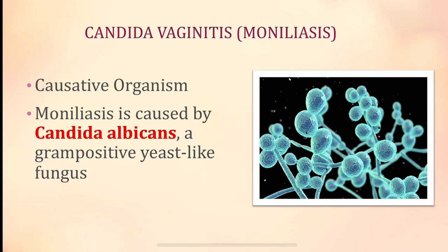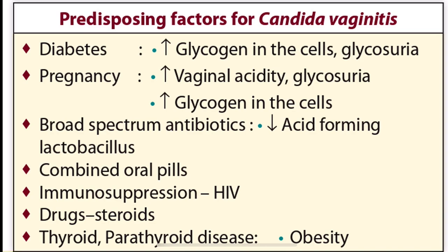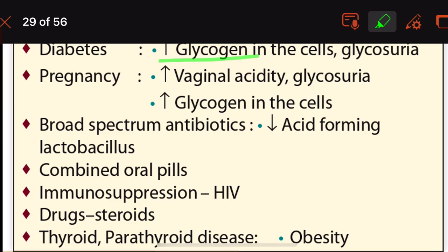Moving on to candida vaginitis or moniliasis. The causative organism of moniliasis is Candida albicans, a Gram-positive yeast-like fungus. Predisposing factors include diabetes — where there is increased glycogen in the cells and glycosuria — and pregnancy, which also causes increased vaginal acidity, glycosuria, and increased glycogen in cells.